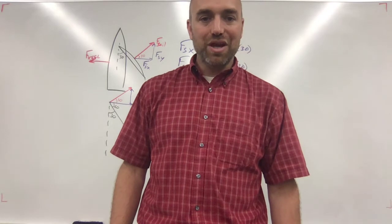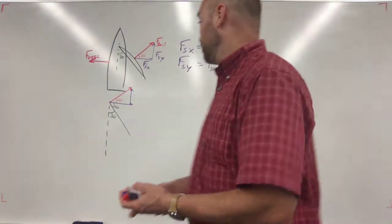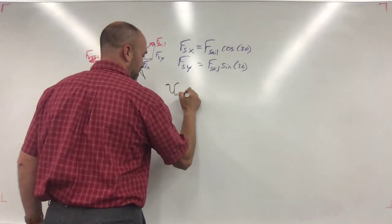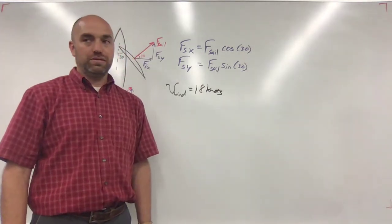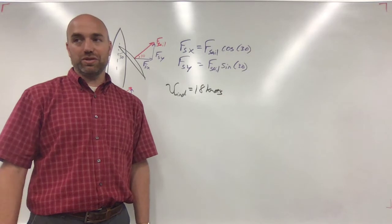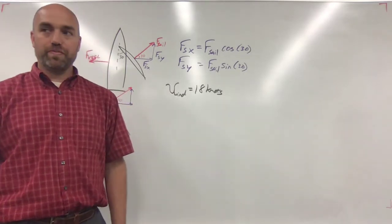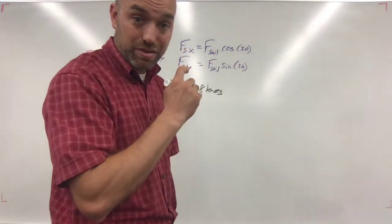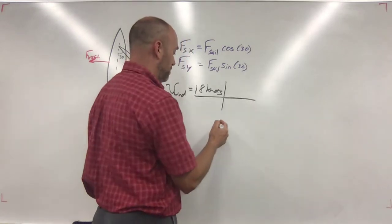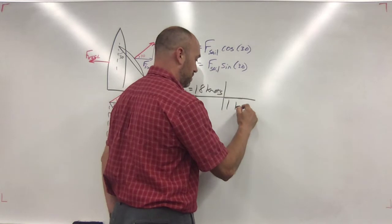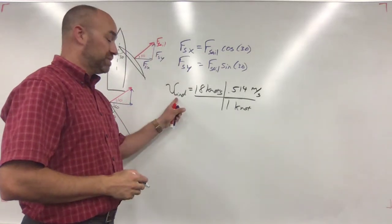You've got an 18-knot wind speed. Your V, speed of the wind, is 18 knots, which is a unit of measure that they use in sailing all the time. Pilots use it too in flying. It's nautical miles per hour. Then it gives you the conversion to meters per second. If you convert that to meters per second, it tells you 0.514. One knot is 0.514 meters per second. That's the speed of the wind.